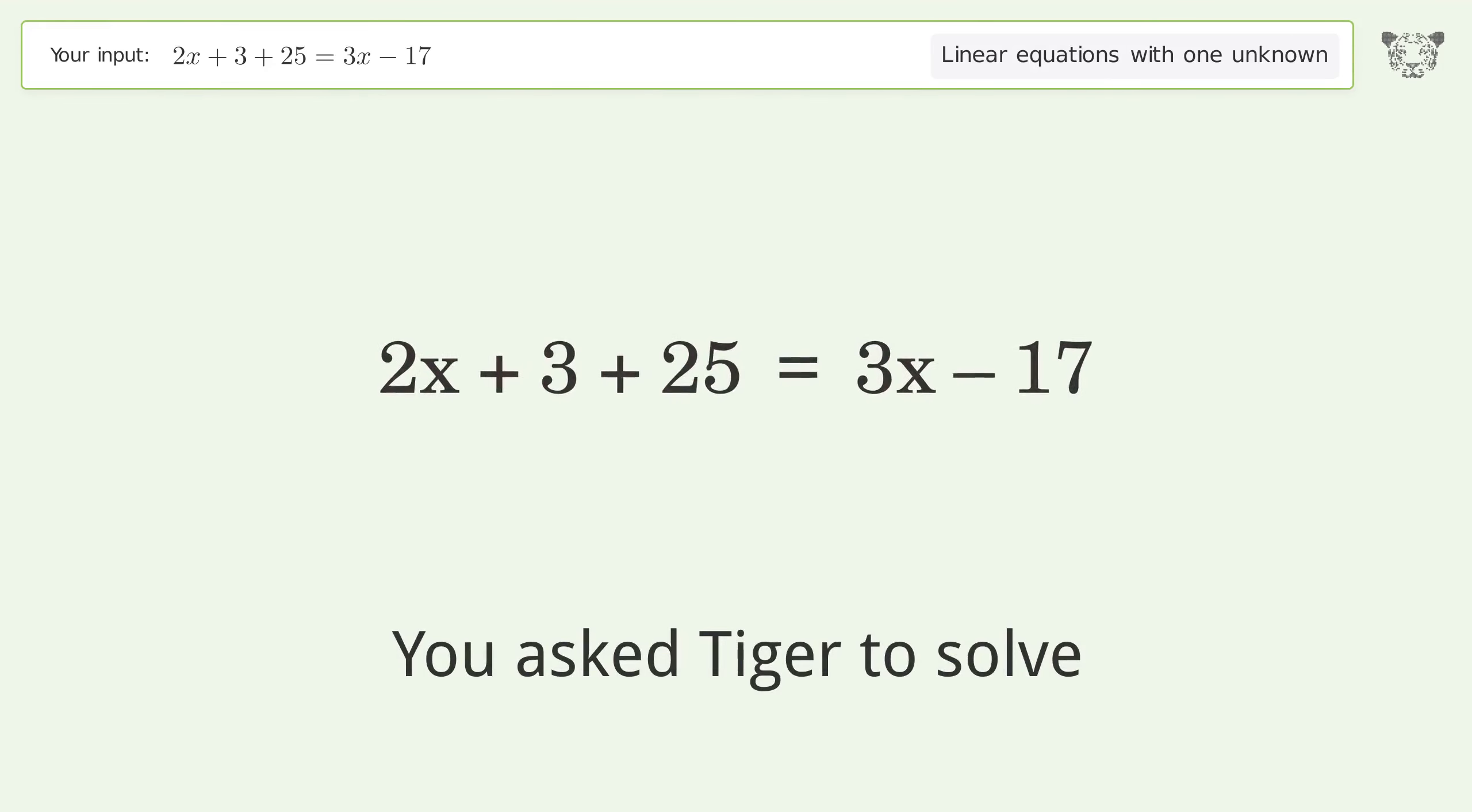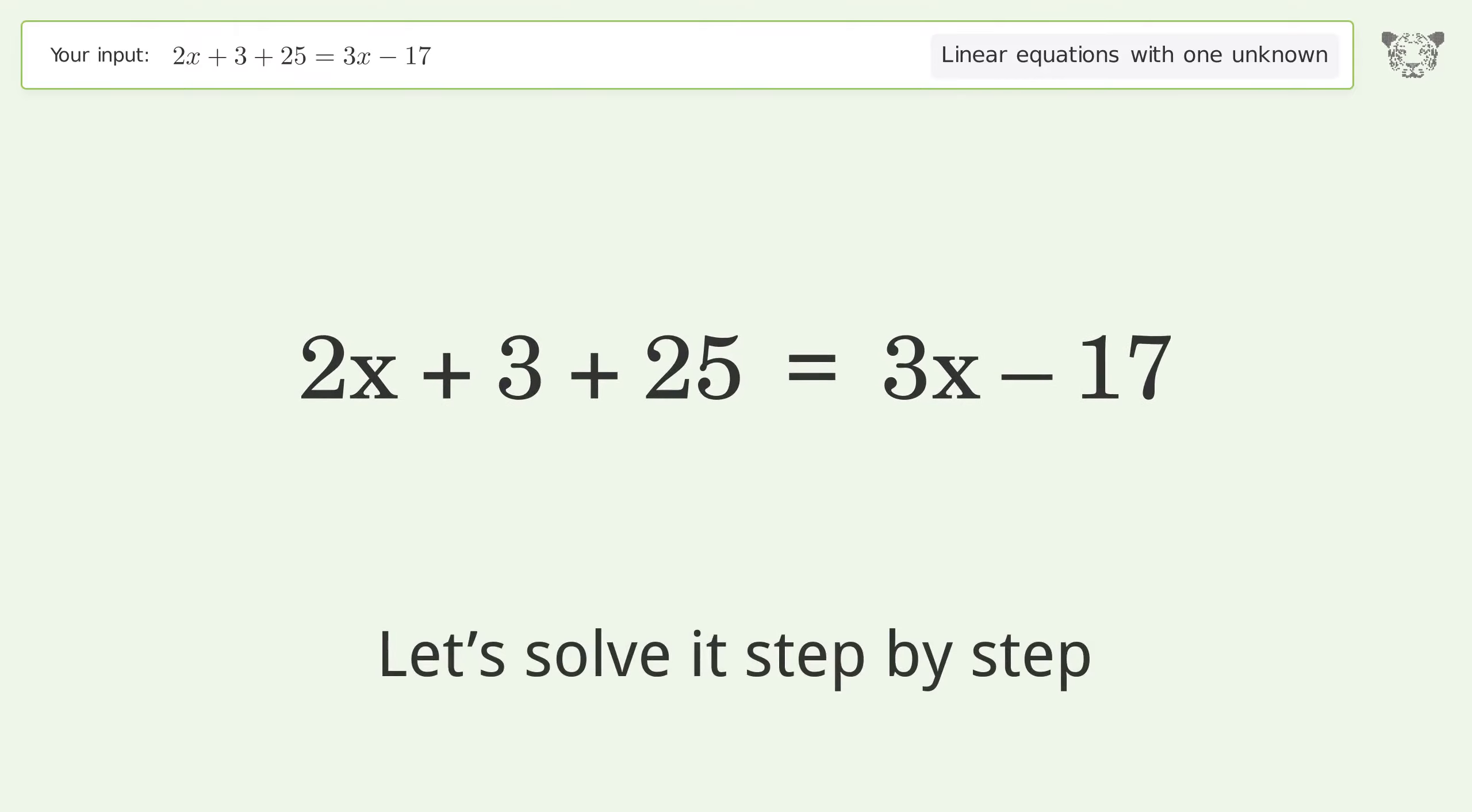You ask Tiger to solve this. This deals with linear equations with one unknown. The final result is x equals 45. Let's solve it step by step. Simplify the expression, simplify the arithmetic.